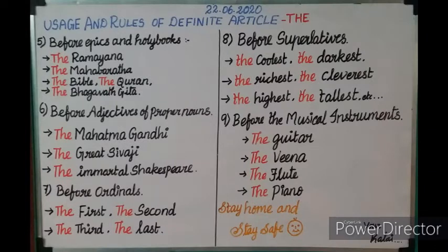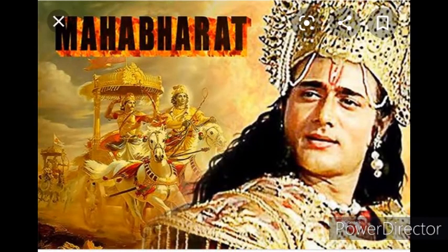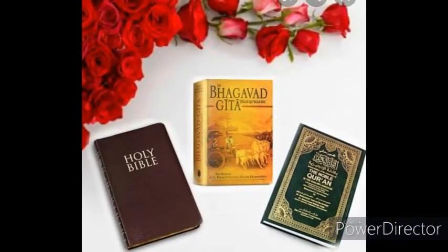Up to this are you clear? Good. Now we will move to the fifth rule: before epics and holy books. You all know about epics like the Ramayana and the Mahabharata. Holy books include the Bible, the Quran, the Bhagavad Gita. Before great epics and holy books we use the definite article 'the.'